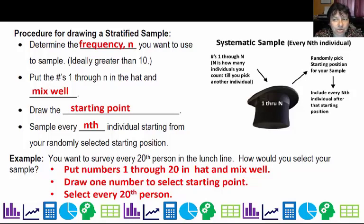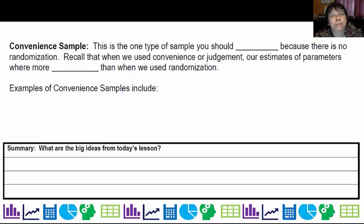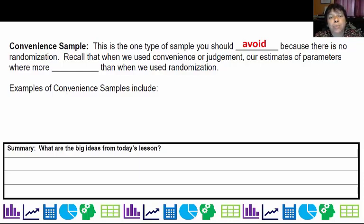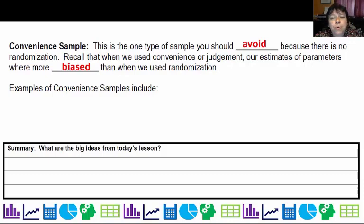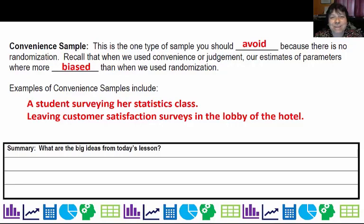There is a sampling method that is used the most but shouldn't be — convenience sampling. This is the one type of sample you should avoid because there is no randomization. From our previous lesson, when we used convenience or judgment sampling, our estimates were more biased than when we used randomization. Convenience samples mean just asking whoever is nearby, like surveying the people in your statistics class. If you leave customer satisfaction surveys in the lobby of a hotel, you're asking for bias — people who feel average won't bother, but people who are very happy or very upset will. Avoid convenience samples at all costs.